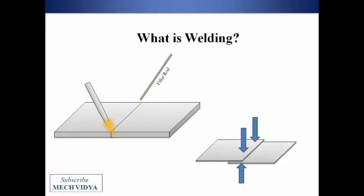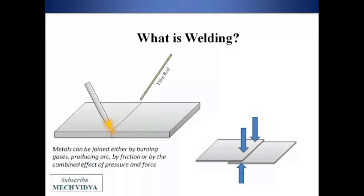Apart from fusion, we can also weld two plates using pressure and localized heating. An example of this is spot welding. Also using friction, electric arc, laser, plasma, etc., we can join two plates. I will make separate videos for all these different welding processes in the subsequent videos.